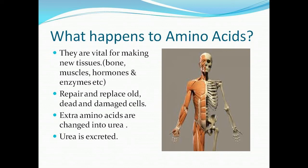Then we have amino acids, which we get after the breakdown of proteins. These amino acids are vital for building proteins, synthesis of muscles, tissues, bones, and hormones, as discussed in the previous lecture, and they are also essential for the growth and repair mechanisms. Excess amino acids are not stored in the body — rather they are converted into a substance called urea. Urea is the waste product of many living organisms and a major organic component of human urine, which is excreted out from the body.